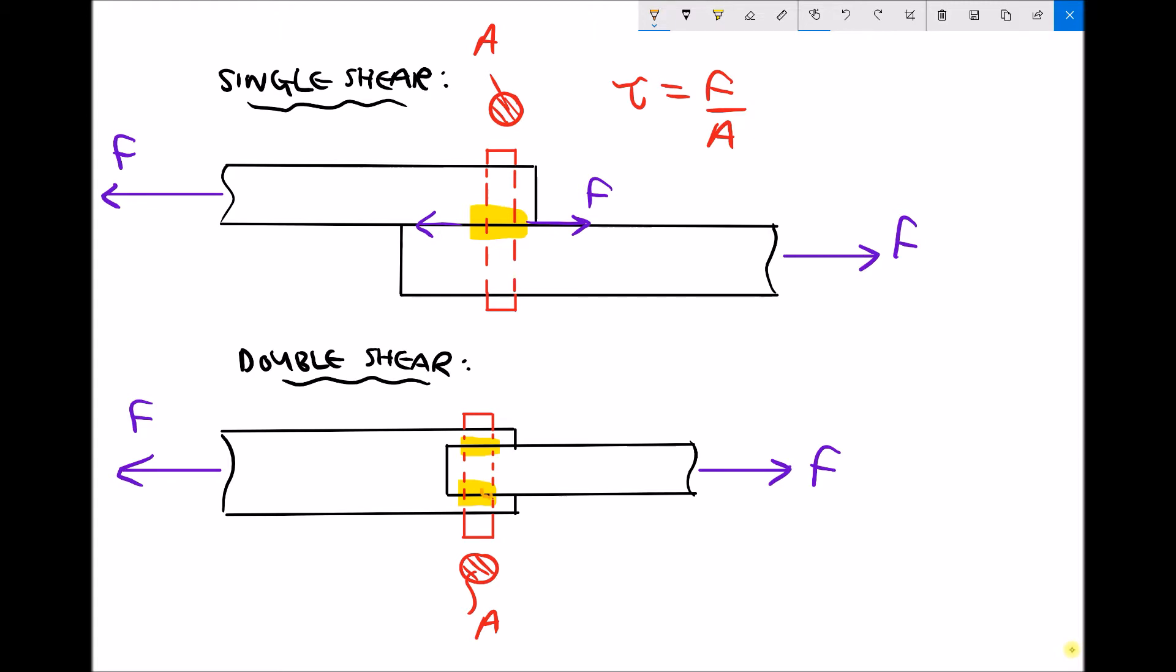We have an area here resisting the shear force, but we also have the same area here resisting the shear force. So for that pin which is being placed in double shear, we would have a stress equal to the force divided by two times the area of the pin. The shearing area is doubled.